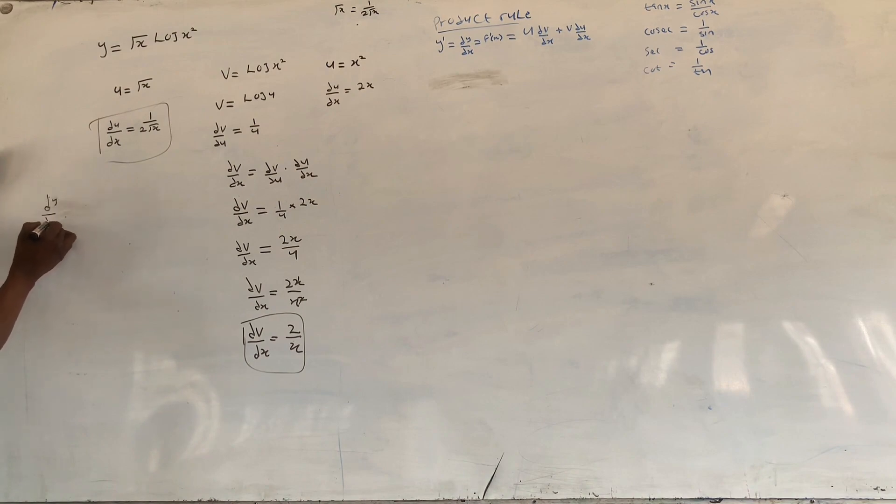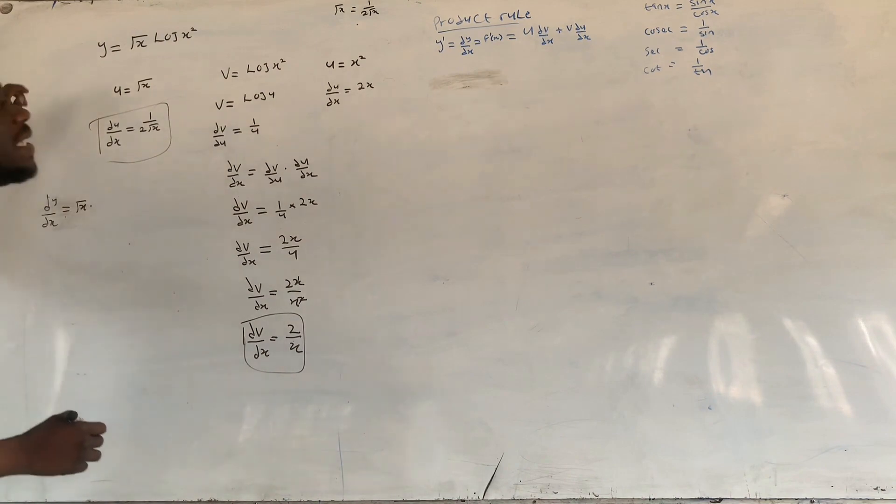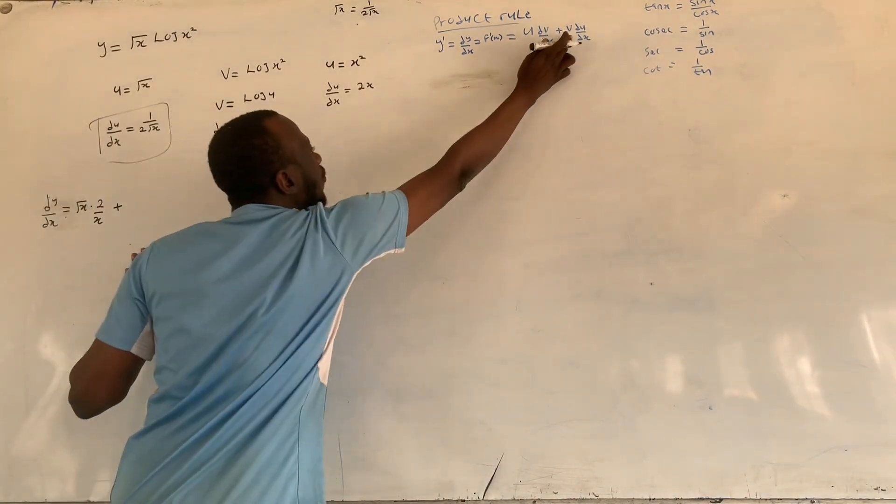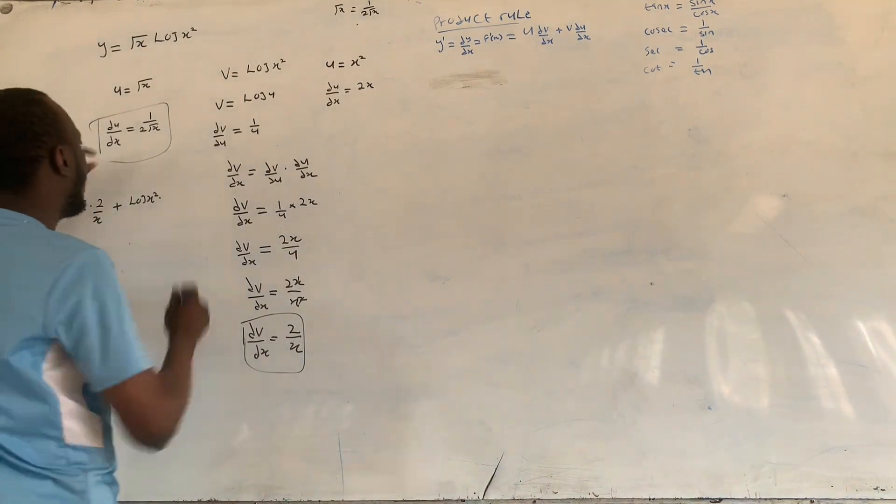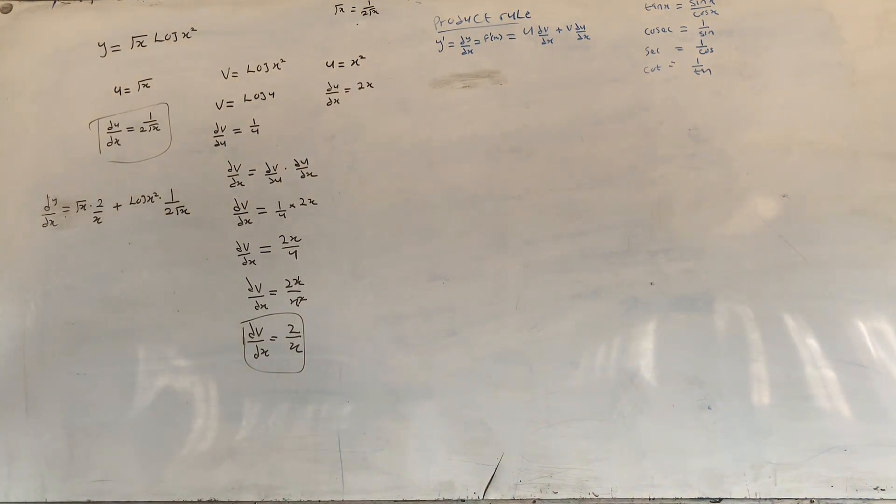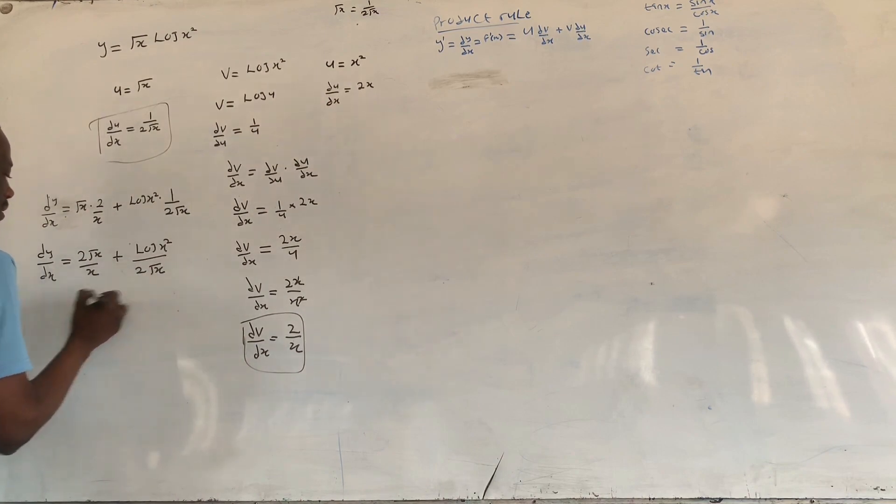dv over dx, our v which is 1 over 2 root x. This should be our final answer for this very question.